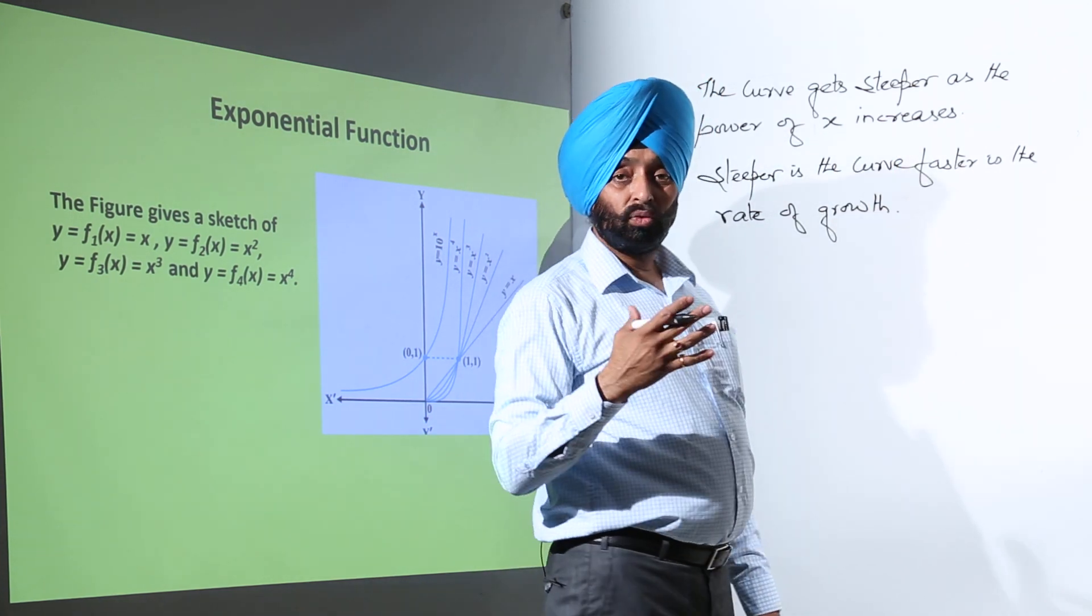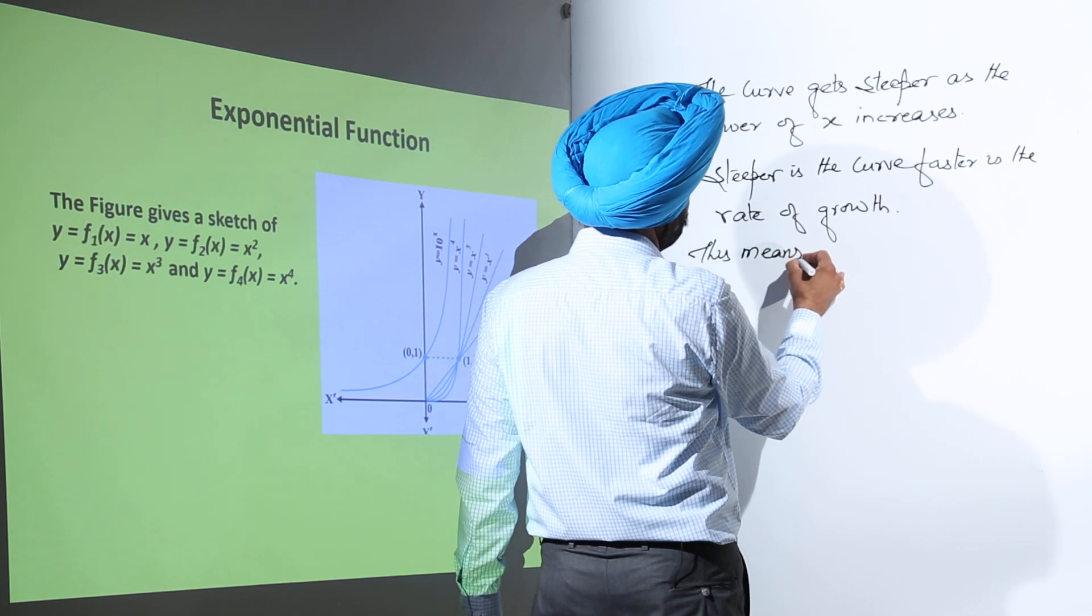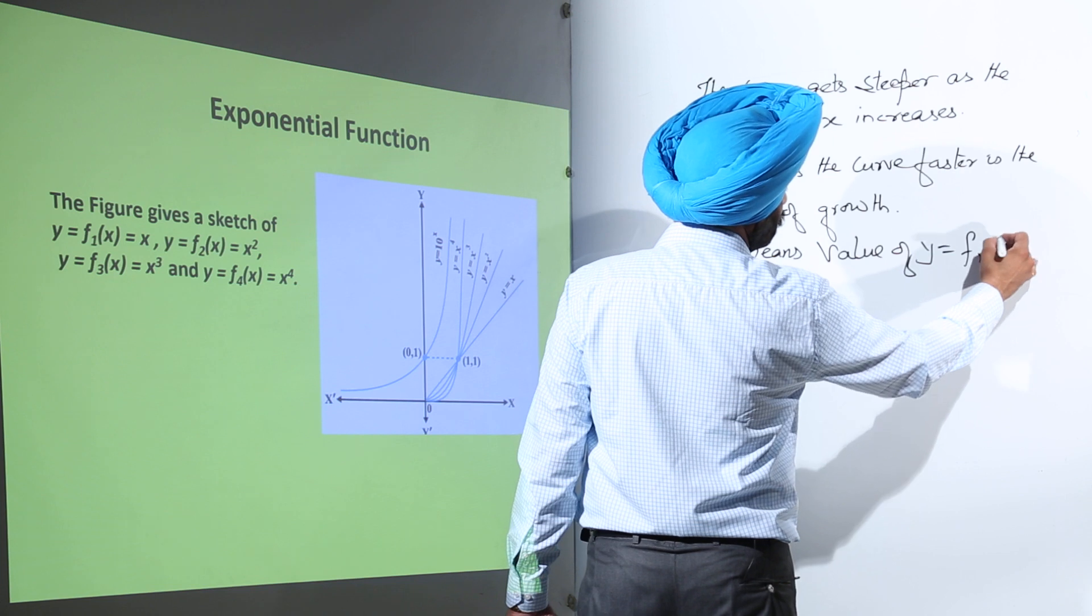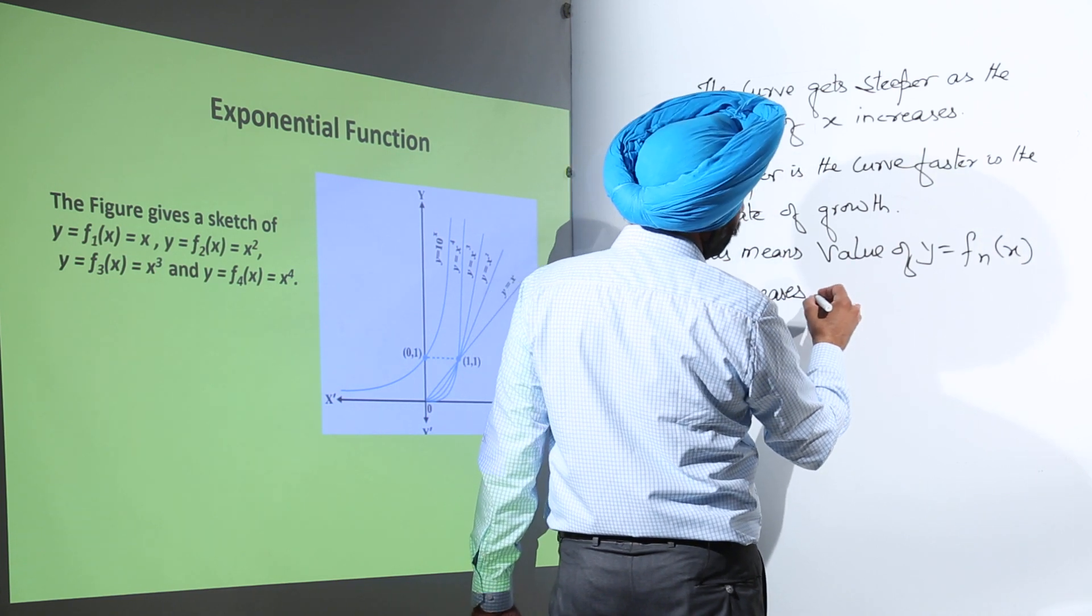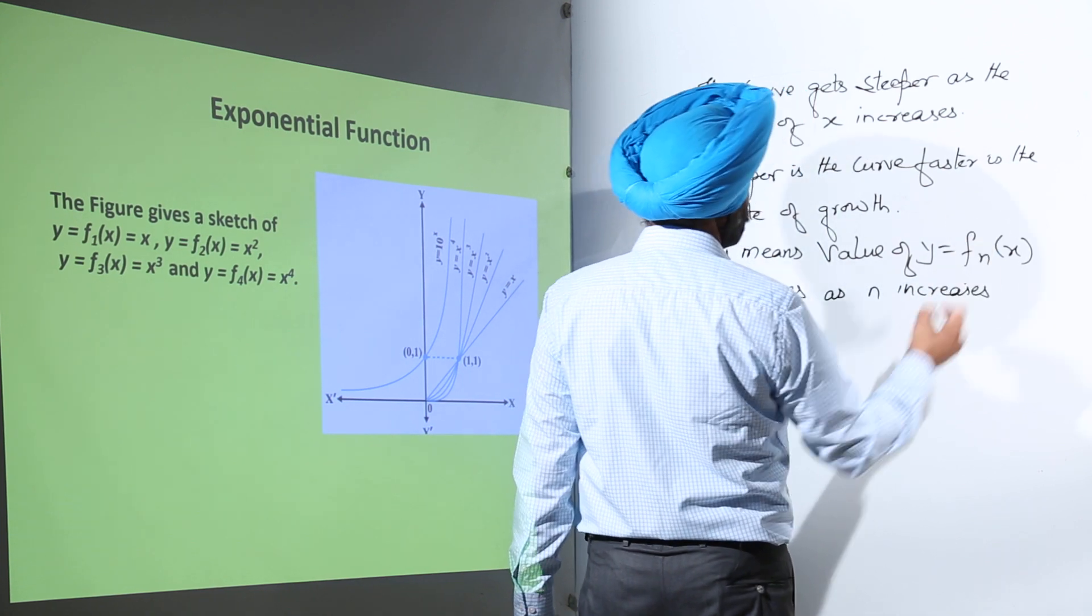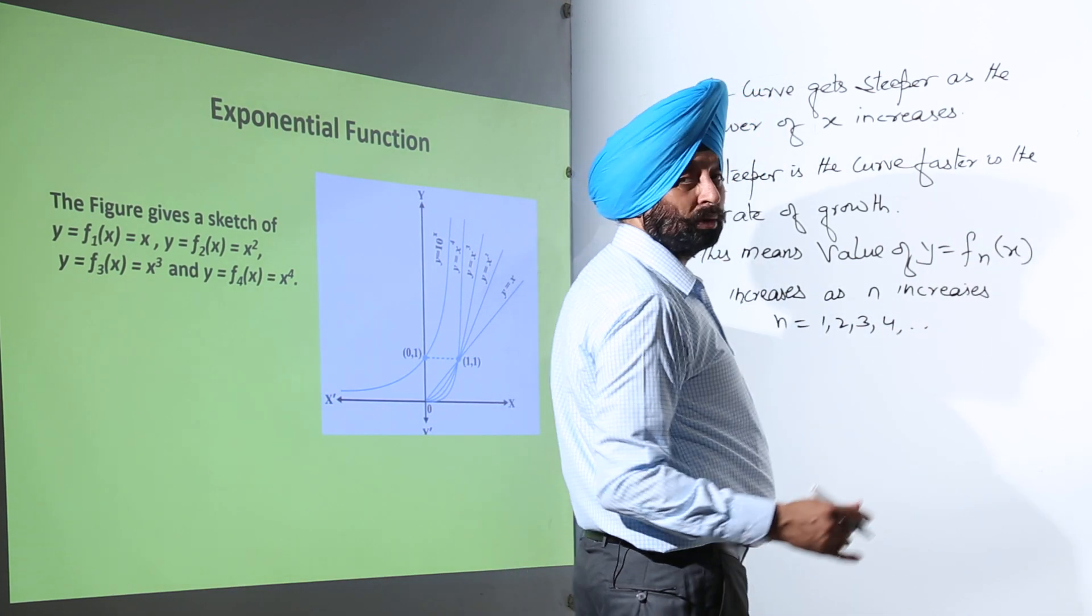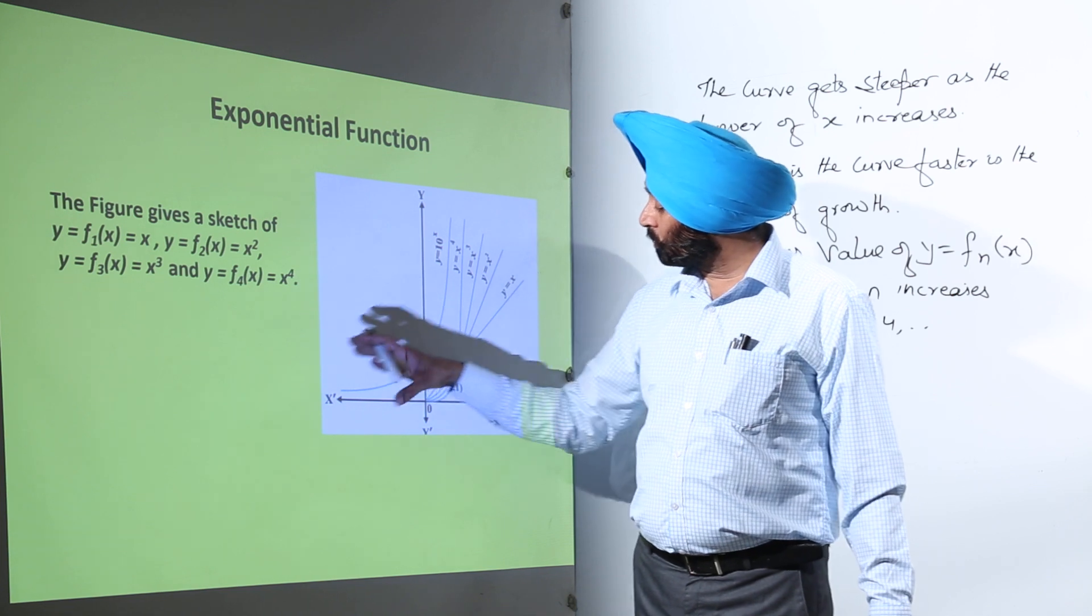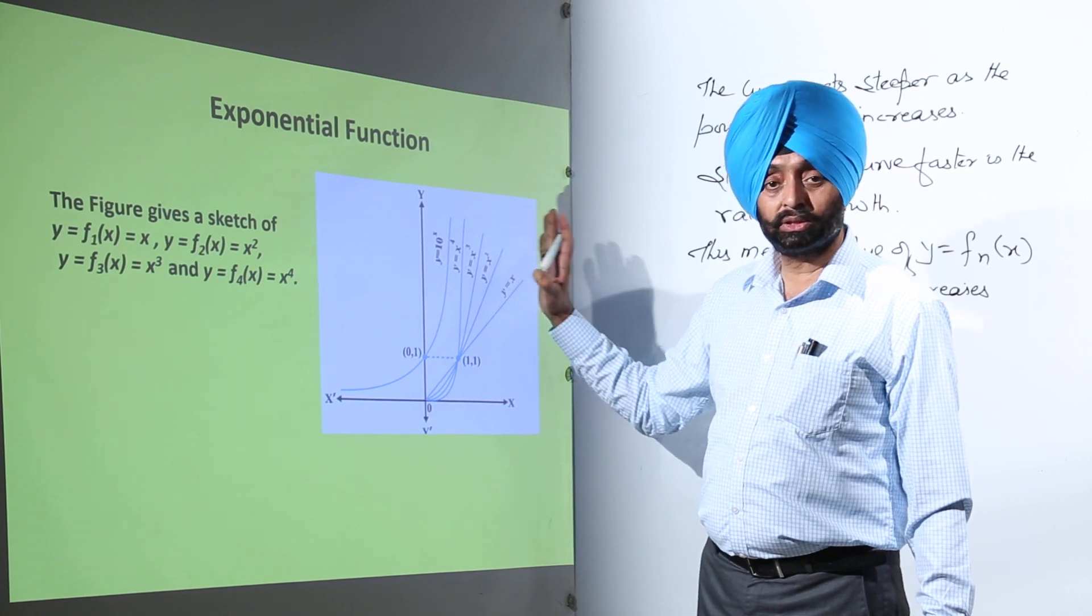Now what this means? Now, this means value of y equals fn(x) increases as n increases. Where n belongs to 1, 2, 3, 4, like we can go for any values. So basic thing is, what this means? As the power of x increases, the function y, the graph of y, goes steeper towards the y-axis.